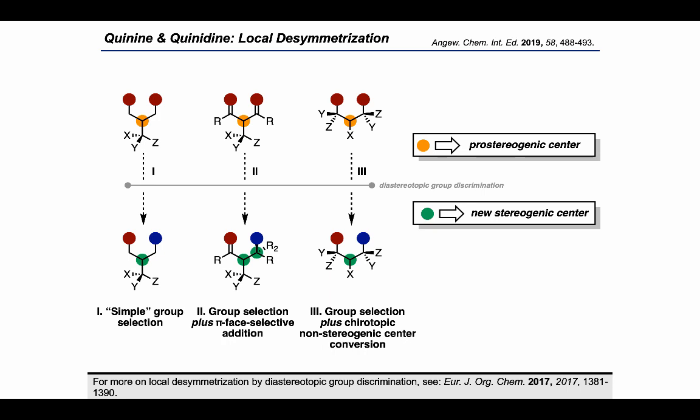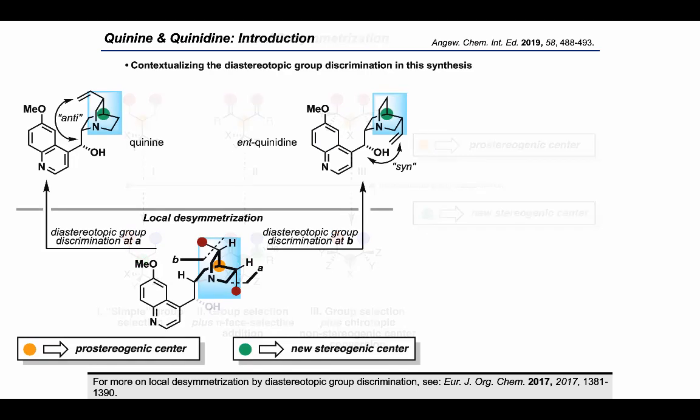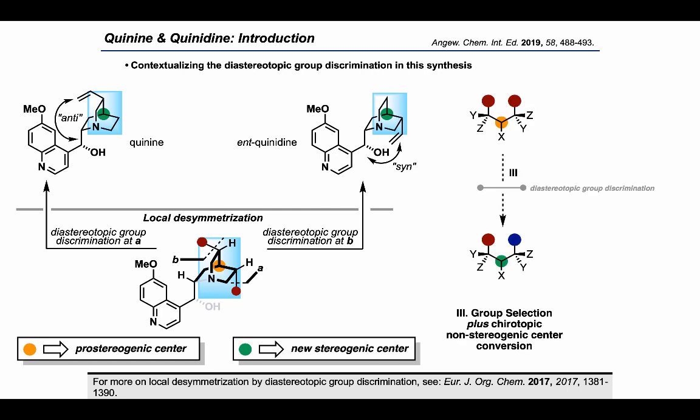In the Chin group's approach to quinine and quinidine, it's this third category that most closely describes what's going on. We can see that if we look at their approach again and identify the chirotopic non-stereogenic center marked in orange, which is being converted into a stereocenter marked in green during the local desymmetrization, mapping that key idea onto our categorization scheme we can see how the methoxyquinoline-bearing appendage can be considered as our ex-substituent.